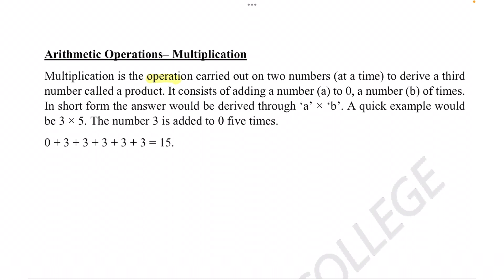Multiplication is the operation carried out on two numbers at a time to derive a third number called a product. It consists of adding a number a to 0 a number b of times. In short form, the answer will be derived through a times b. A quick example would be 3 times 5: the number 3 is added to 0 five times, so it will be 0 plus 3 plus 3 plus 3 plus 3 plus 3, which equals 15.